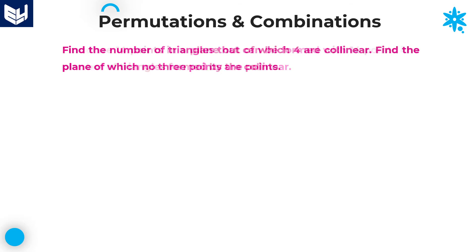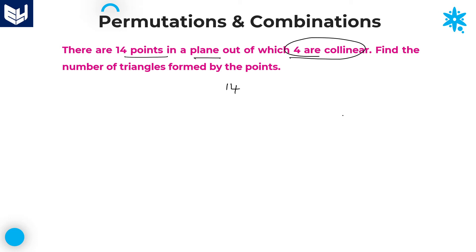Now let us see the next question, which has a different condition from the previous one. There are 14 points in a plane, out of which 4 points are collinear — meaning these 4 points lie on the same line. The remaining 10 points are non-collinear, placed elsewhere in the plane. No 3 of those remaining points are collinear.